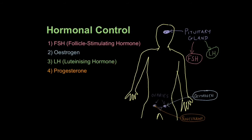Then we have luteinizing hormone, or LH, also released from the pituitary gland, which stimulates the process of ovulation when the egg cell is released from the ovaries. Finally, we have progesterone, released from the corpus luteum — a withered, dying cluster of cells created when the egg cell is released — and it releases progesterone for a short time.